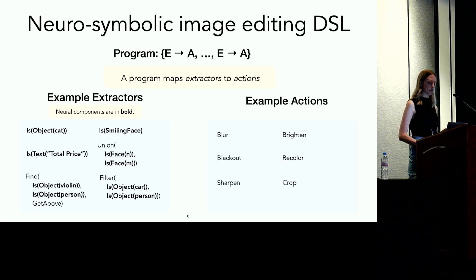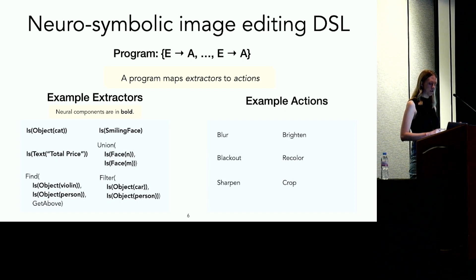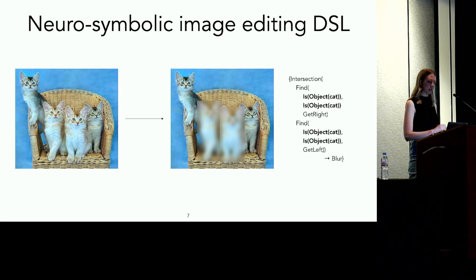In our implementation, we use Amazon Recognition. Extractors can be composed with set operators, namely complement, intersection, and union, as well as the constructs find and filter. Find and filter describe programs that involve positional attributes of objects based on their relative locations in an image. For instance, this find program returns all person objects that are above violin objects, and this filter program returns all people objects that are contained inside of car objects. The operators in our DSL can be composed to form complex programs, such as one that finds all cat objects that have a cat to their left and to their right, and blurs those cat objects.